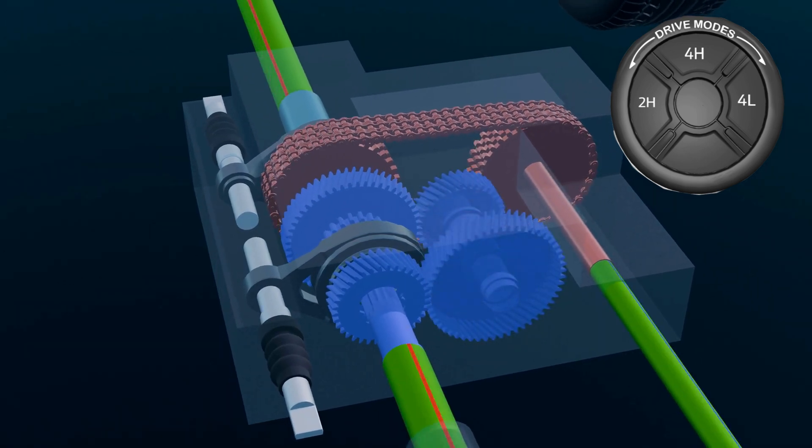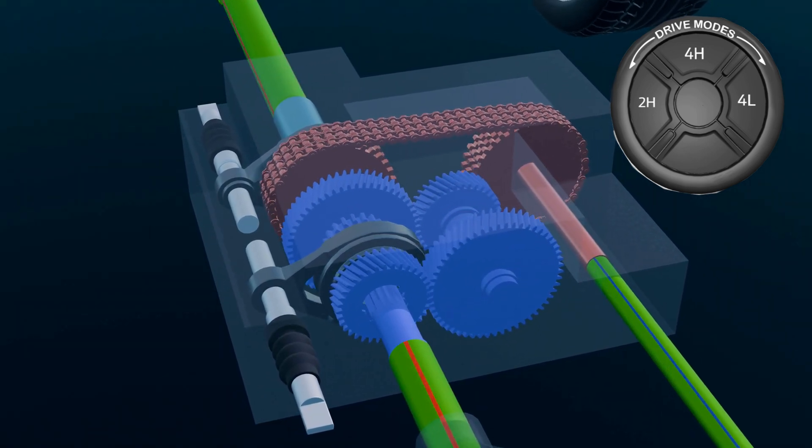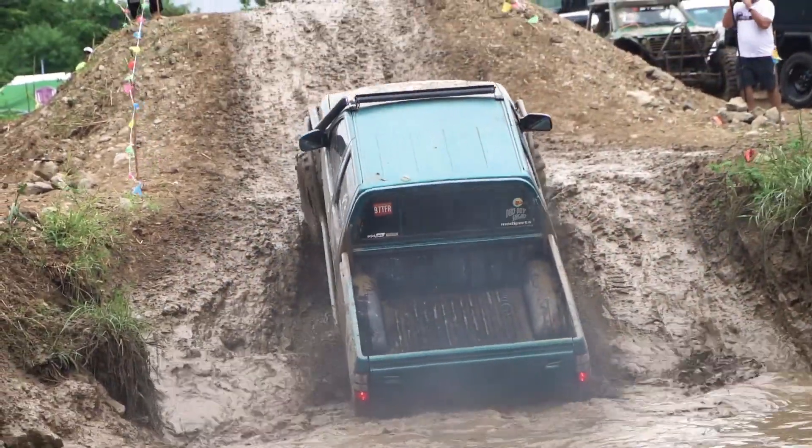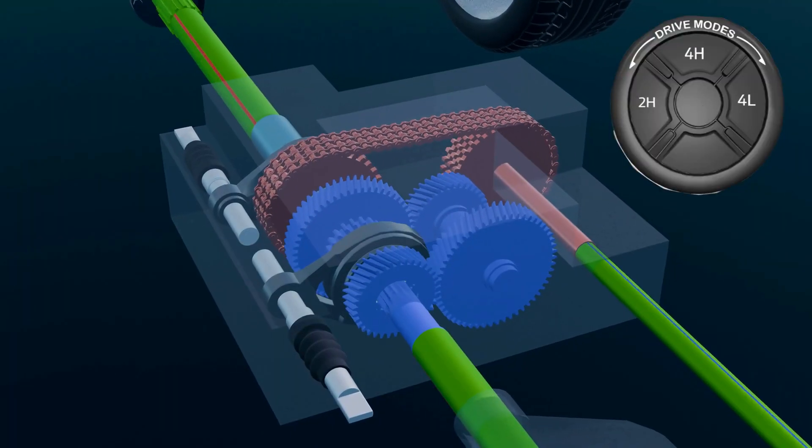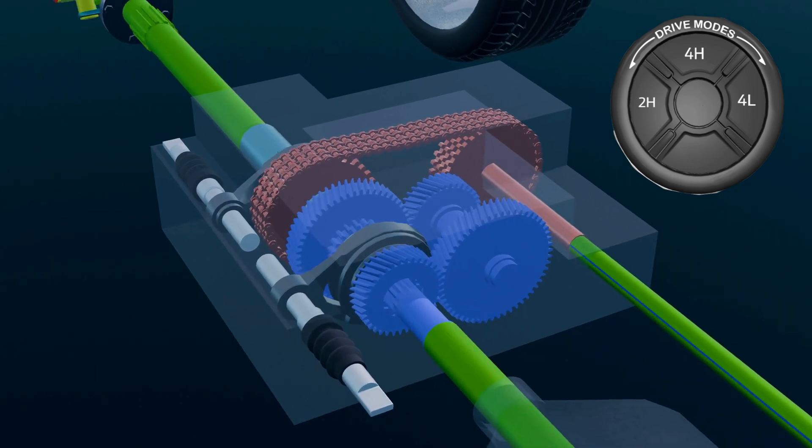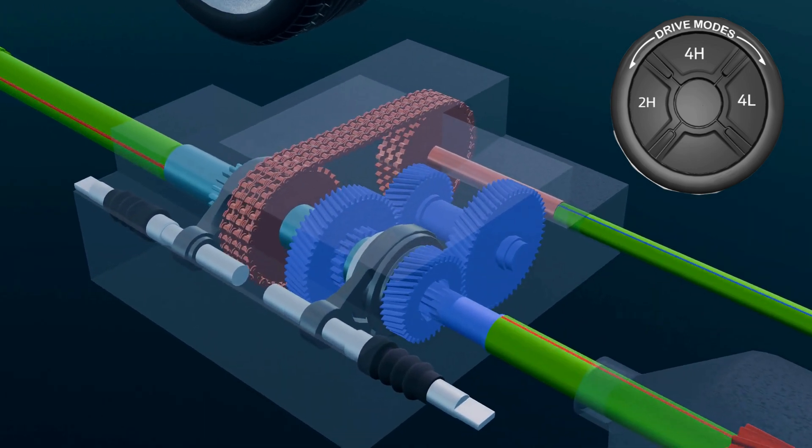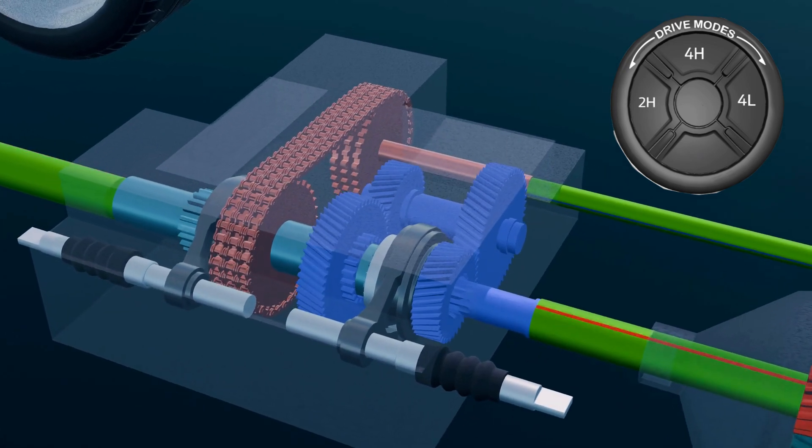This set slows down wheel speed while multiplying torque, ideal for crawling over rocks, steep climbs, or deep mud. The gear ratio in 4L is usually around one is to three, meaning the vehicle speed drops to one-third, but torque is tripled, giving serious pulling power.